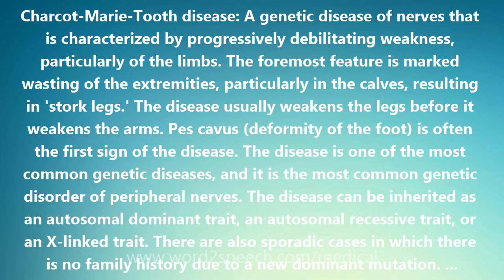The disease usually weakens the legs before it weakens the arms. Pes cavus, a deformity of the foot, is often the first sign of the disease. It is one of the most common genetic diseases, and the most common genetic disorder of peripheral nerves.